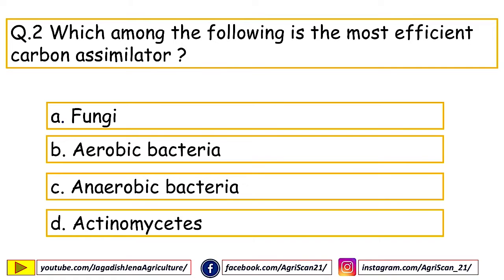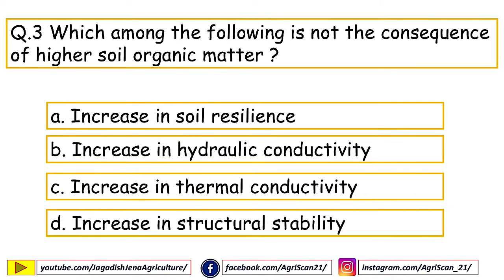Next question: which among the following microbes is the most efficient carbon assimilator? The right answer is fungi. Fungi can assimilate up to 20 to 30 percent carbon.